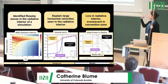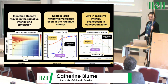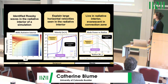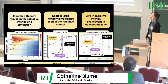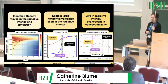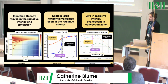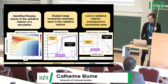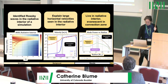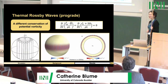To wrap up the classical Rossby wave part: we found them in the radiative interior; they explain the large velocities we're seeing because almost all of the power is located in Rossby wave modes, particularly in the radiative interior; and they're evanescent in the convection zone. And because I have a little bit of time, I'm also going to talk about thermal Rossby waves.